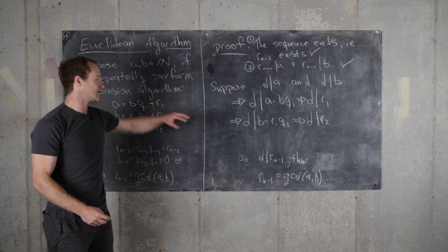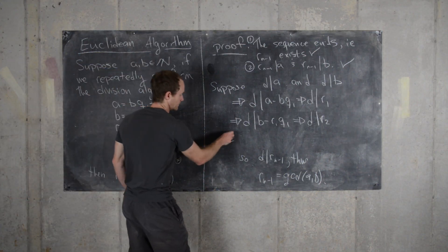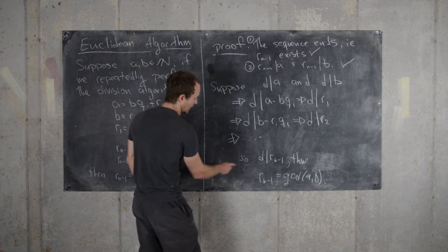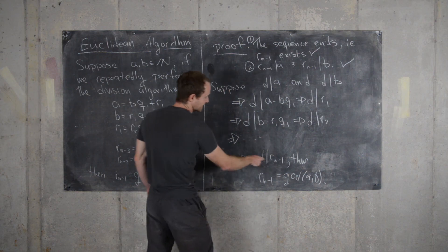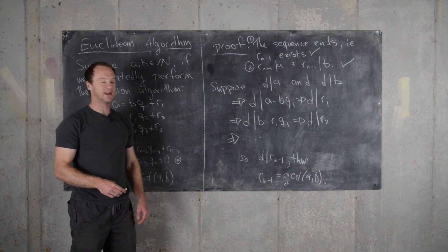And so now we can see how we're going. Now we can go towards the bottom. And we'll end up with D divides R N minus 1, which tells us that R N minus 1 is, in fact, the GCD of A and B.